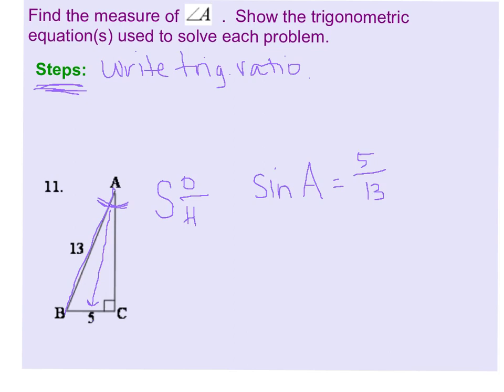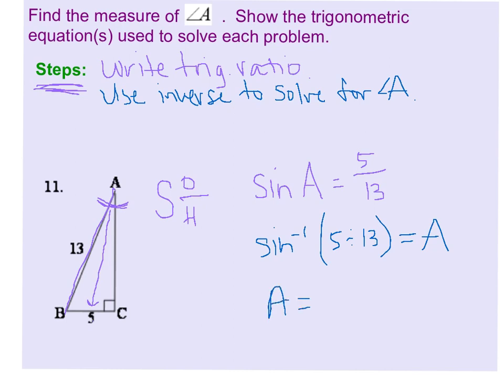Next what you want to do is use the inverse to find the angle. So that would be our second step: use inverse to solve for A. Of course, if we're trying to find a different angle measure, it won't be solved for A. It would be solved for angle B or whatever angle measure. So we are going to say that the inverse sine of 5 over 13 equals angle A. And then you just go right over to your calculator and find the answer to this inverse sine problem. And you should get angle A is equal to about 22.6 degrees.